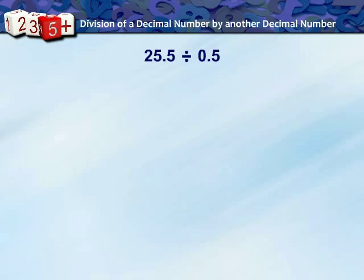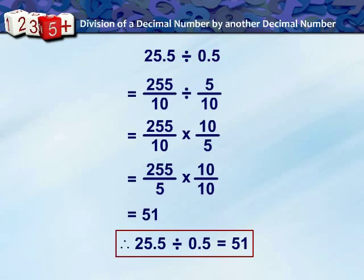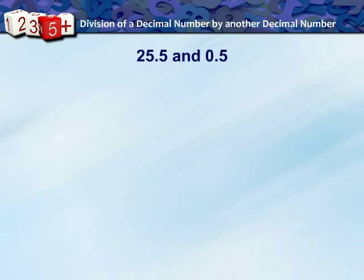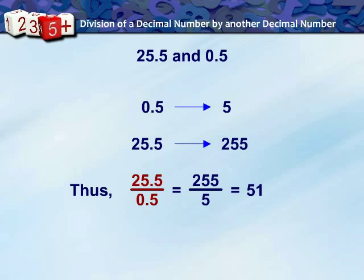Let us now divide two decimal numbers. Take example 25.5 divided by 0.5. Converting to fractions and dividing them we get 51 as answer. We observe that in both 25.5 and 0.5 there is one digit after decimal point and the decimal point was shifted by one place to the right in 0.5 to make it 5. Also there was a shift of one decimal point to the right in 25.5 also to make it 255. Thus we can say 25.5 divided by 0.5 is equal to 255 divided by 5 which gives 51.